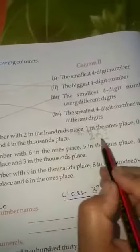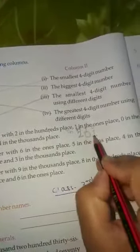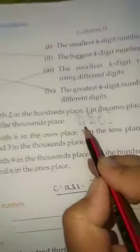2 is in the hundreds place, and 4 in the thousands place. So the answer is 4201.